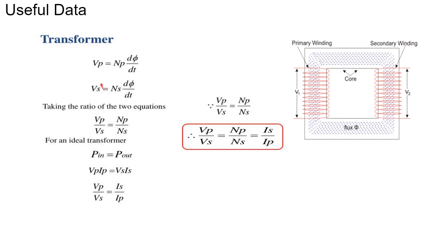Here, Vp is the primary EMF induced in the primary winding, and Vs is the EMF induced in the secondary winding. These two equations are modeled according to Faraday's laws of electromagnetic induction. By taking the ratio of Vp and Vs, we get Vp/Vs = Np/Ns, where Np is the number of turns of the primary winding and Ns is the number of turns in the secondary winding.